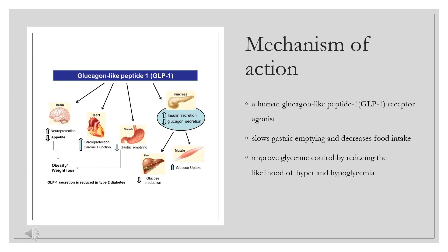Mechanism of Action. Exenotide is a human glucagon-like peptide 1 (GLP-1) receptor agonist. By activating this receptor, insulin secretion is increased and glucagon secretion is decreased in a glucose-dependent manner. Exenotide also slows gastric emptying and decreases food intake. These effects work synergistically to improve glycemic control by reducing the likelihood of hyper- and hypoglycemia.